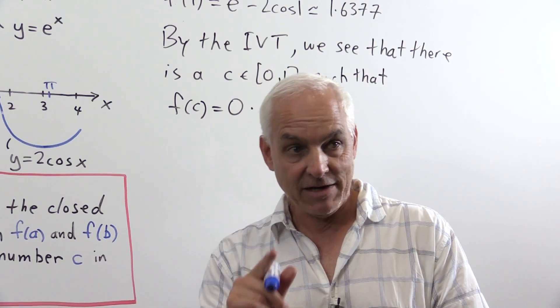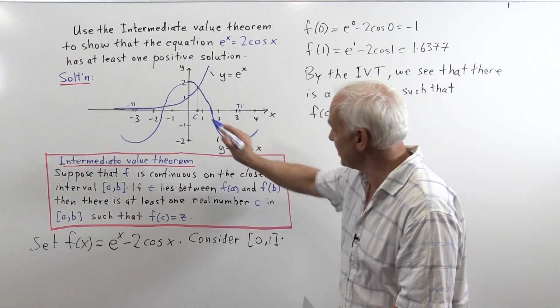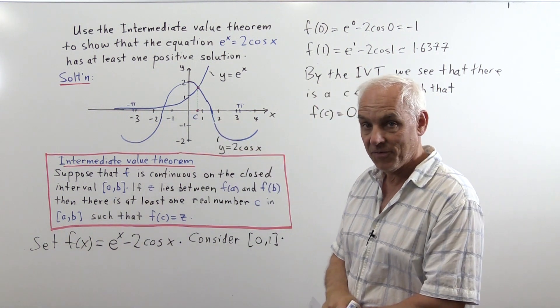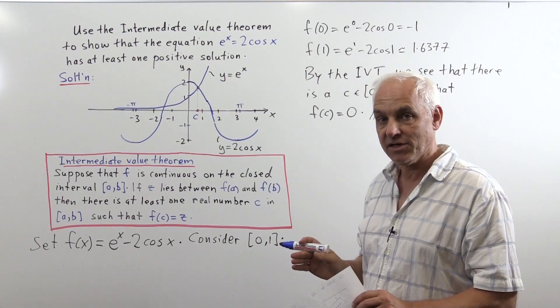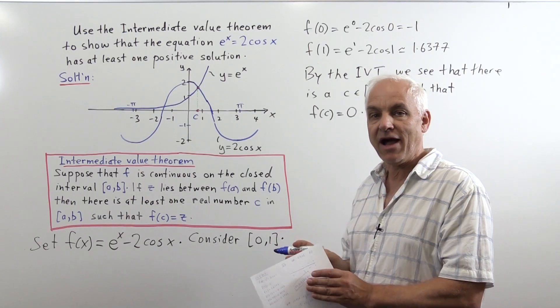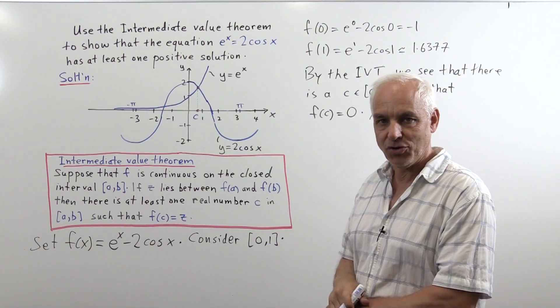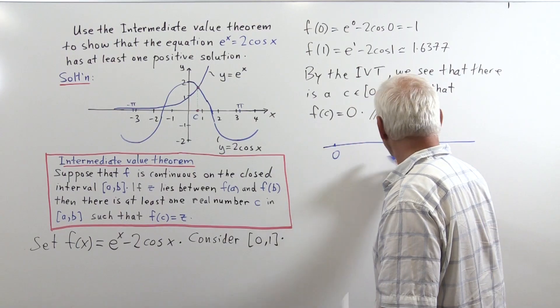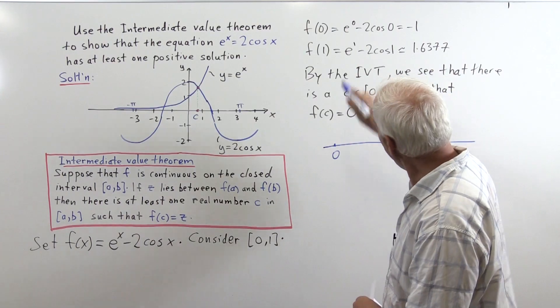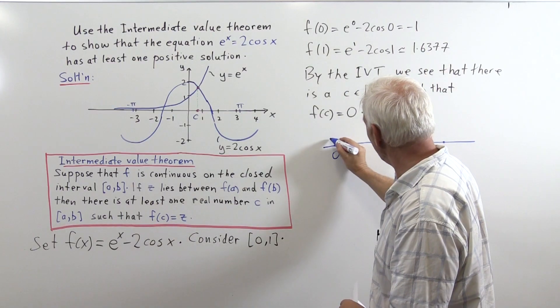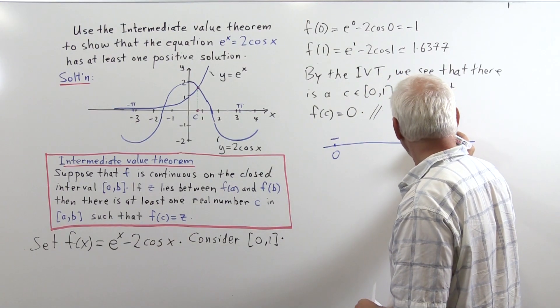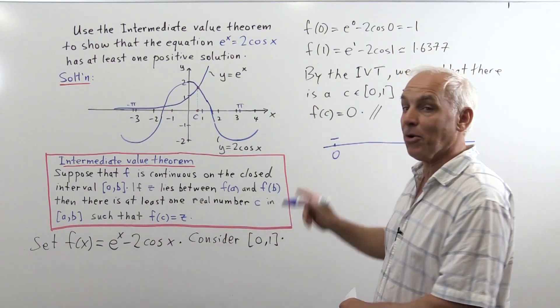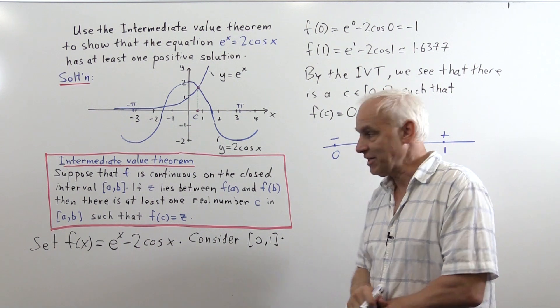To actually find a more accurate value for c, we can proceed as Stevin did by an idea of successively dividing the interval into 2. If we look at the interval from 0 to 1, we know the function's value at 0 is negative and at 1 is positive. So we know there's a 0 somewhere in this interval.